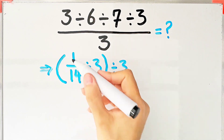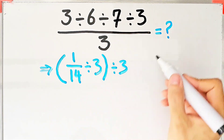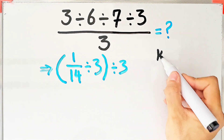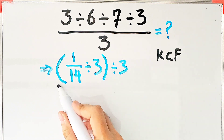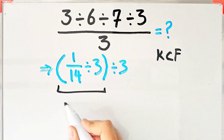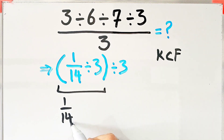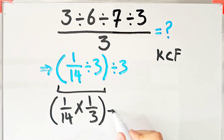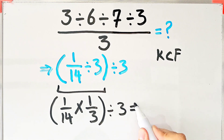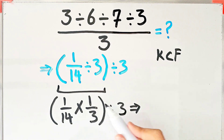Again, we simplify the parentheses. We use the KCF rule to solve this part. We keep the first fraction as it is, then we change the division sign to the multiplication sign, and after that we flip the second number. Now we have 1 over 14 times 1 over 3, divided by 3.